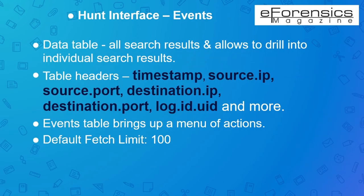The final section of output in the Hunt interface is a data table which comprises all search results. This table provides an option to drill into individual search results as required. You can sort the table headers, expand the search results, see a timestamp field and much more. Standard fields related to security events include source.ip, source.port, destination.ip, destination.port, log.id.uid (a unique identifier for Zeek logs), network.communityid, and event.dataset. You can also find some additional data-specific fields as well.